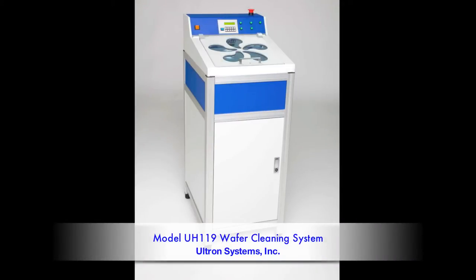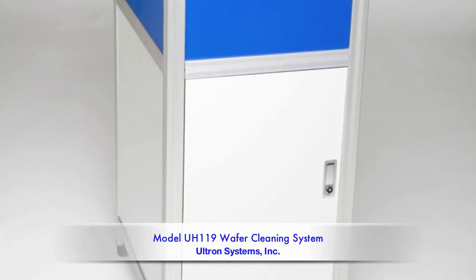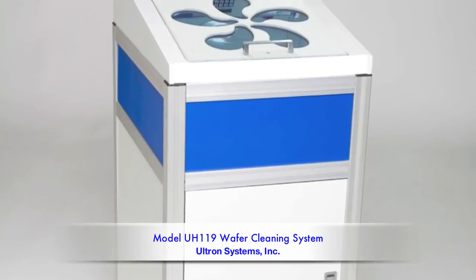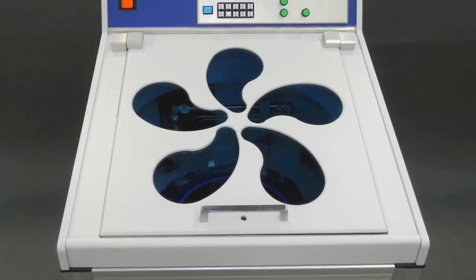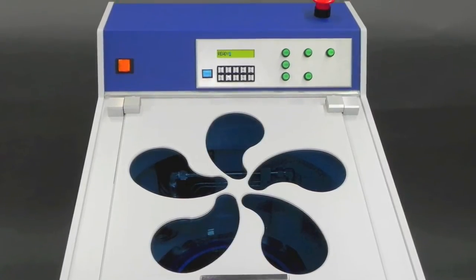The model UH-119 is Ultron System's latest design in quality wafer cleaning operations. Designed primarily for post-icing applications, the UH-119's non-contact cleaning ability utilizes a variable cycle high-pressure wash for highly efficient, fast, and exceptional wafer cleaning.